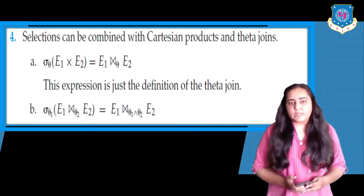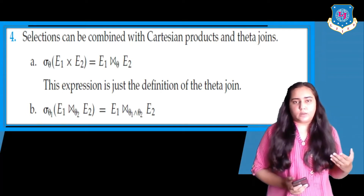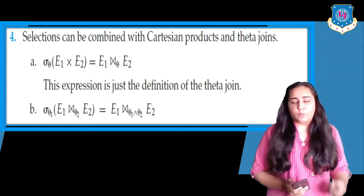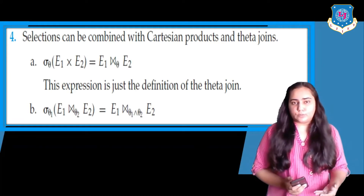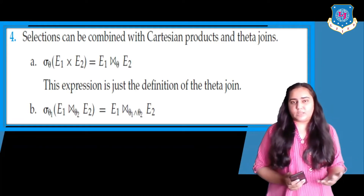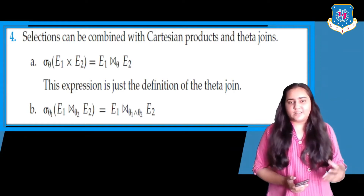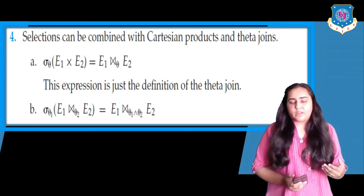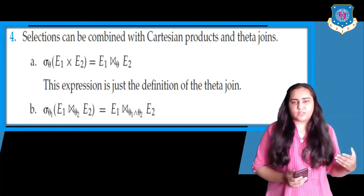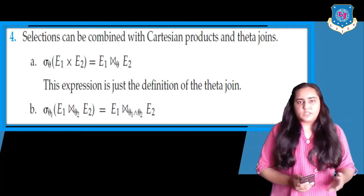In part B, you again have a select operation, but this time the theta condition is only theta 1. Inside you already have a theta join with condition theta 2 and tables E1 and E2. This can be transformed so that E1 is joined with E2 by combining the two theta conditions with an 'and' operation — giving theta 1 and theta 2 — and then E2. So this is our fourth rule.